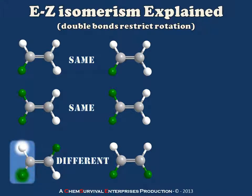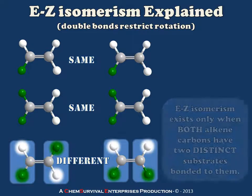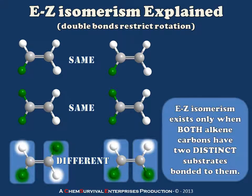This is where the E-Z isomerism nomenclature comes in. Our requirement is that we have alkene carbons which contain two distinct groups. In my other examples where they were the same, at least one of my two alkene carbons had exactly the same group attached. So E-Z isomerism exists only when both alkene carbons have two distinct substituents each.